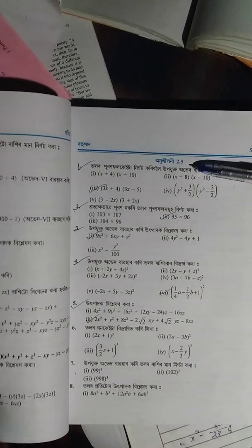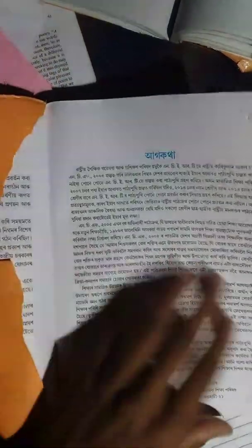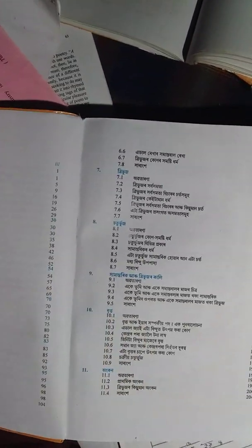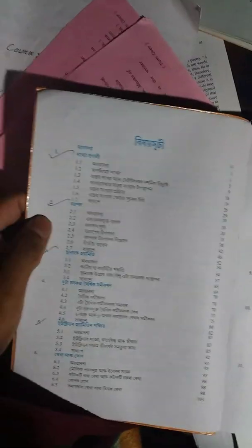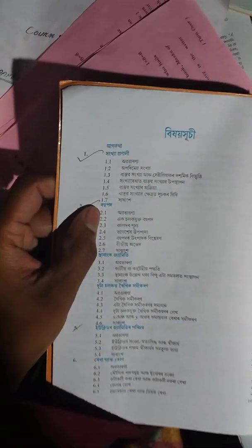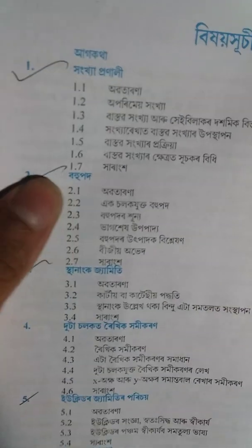Exercise 2.5, Class 9, Mathematics book, Mathematics book solution. Unit 7 name, Bohupad.